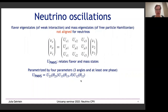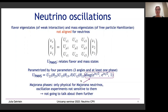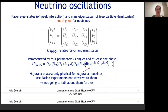In addition, if neutrinos are Majorana particles, we also have two physical Majorana phases. However, oscillation experiments are not sensitive to these Majorana phases, so I will not discuss them further. This leaves us with four parameters to measure.